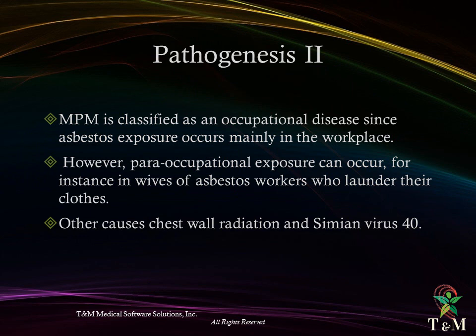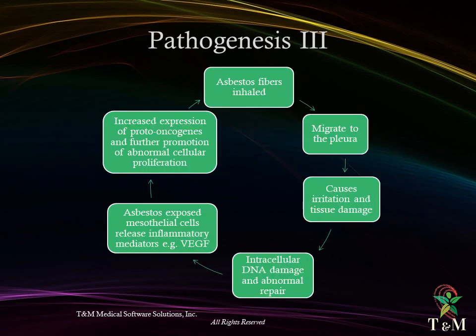Mesothelioma is classified as an occupational disease since asbestos exposure occurs mainly in the workplace. However, para-occupational exposure can occur — for instance, in the wives of asbestos workers who launder their clothes. Other causes include chest wall radiation and simian virus 40. Inhaled asbestos fibers migrate to the pleura, causing irritation and tissue damage, intracellular DNA damage, and abnormal repair. Asbestos-exposed mesothelial cells release inflammatory mediators, with increased expression of proto-oncogenes and further promotion of abnormal cellular proliferation.